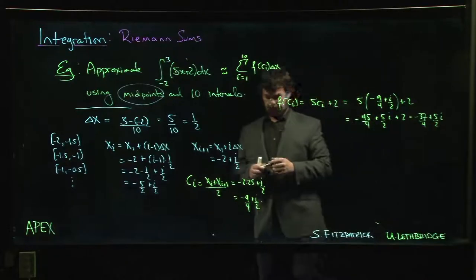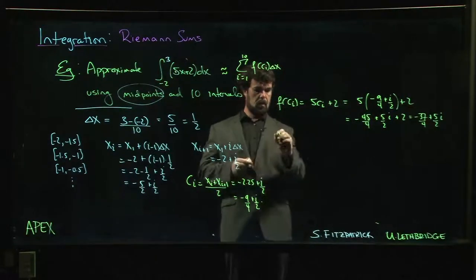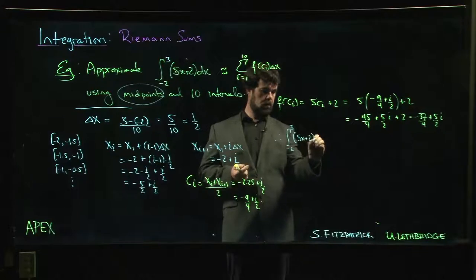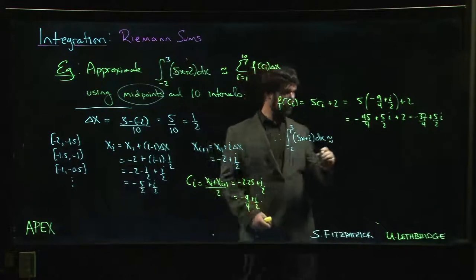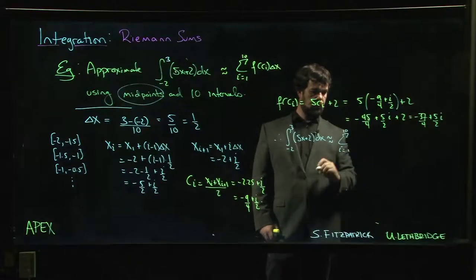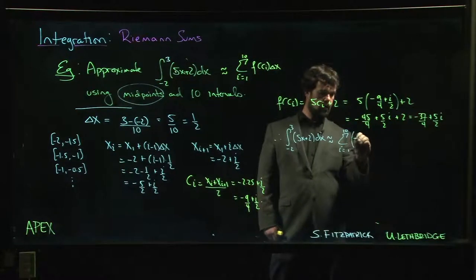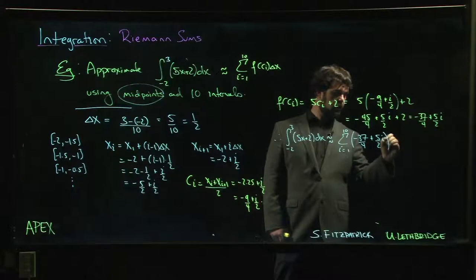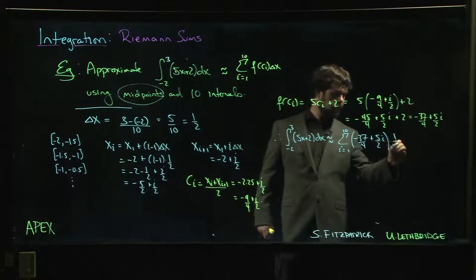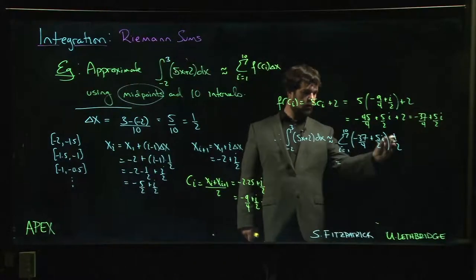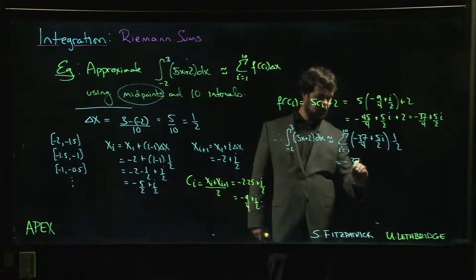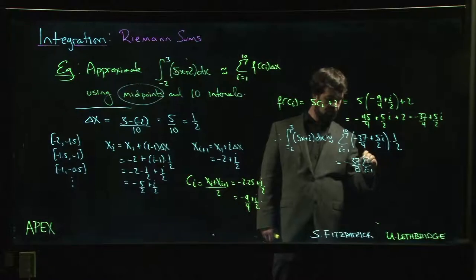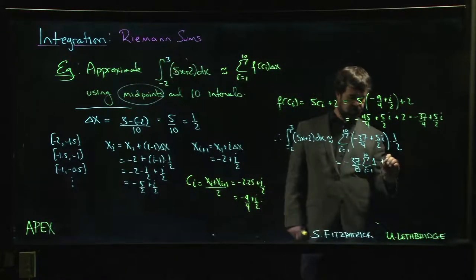All right. So our integral is approximately the sum i going from 1 to 10 of minus 37 over 4 plus 5 over 2 i times delta x, which is a half. So that's going to be minus 37 over 8 times the sum i going from 1 to 10 of 1 plus 5 over 2 i.